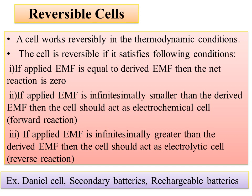A cell works reversibly under thermodynamic conditions. The cell is reversible if it satisfies the following conditions: the applied EMF and the derived EMF are exactly the same, giving zero net reaction. If the applied EMF is slightly smaller than the derived EMF, there will be a forward reaction. If the applied EMF is greater than the derived EMF, then the cell acts as an electrolytic cell.